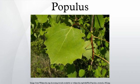The shoots are stout, with a terminal bud present. The leaves are spirally arranged and vary in shape from triangular to circular or lobed, with a long petiole. In species in the sections Populus and Aigeiros, the petioles are laterally flattened, so that breezes easily cause the leaves to wobble back and forth, giving the whole tree a twinkling appearance in a breeze.